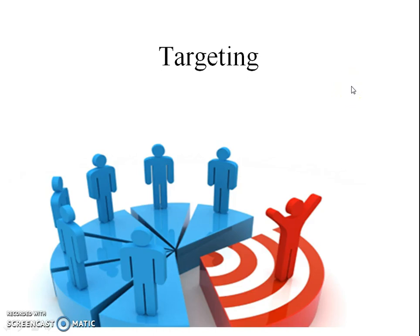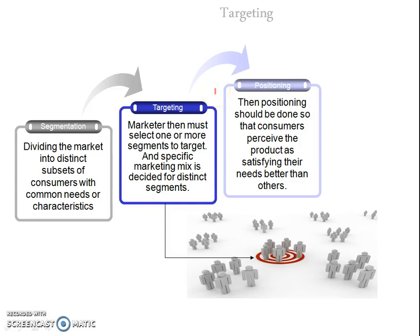In the previous video we discussed about segmentation. The next step after segmentation in marketing is selecting the target market, or targeting. Segmentation is a process of dividing the whole market into different subsets where one subset has similar kinds of needs and wants. After segmenting the market, the marketer needs to know which segment or segments to target, because they have to make the marketing mix according to the target market selected. The process of selecting the target market is known as targeting.